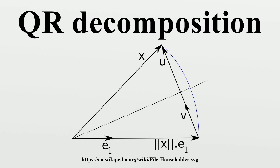If A has n linearly independent columns, then the first n columns of Q form an orthonormal basis for the column space of A. More generally, the first k columns of Q form an orthonormal basis for the span of the first k columns of A.